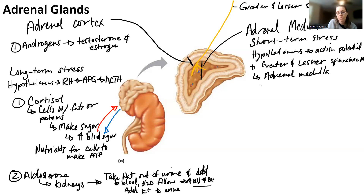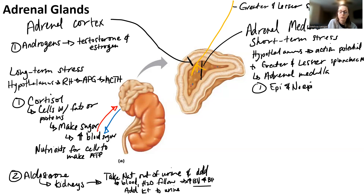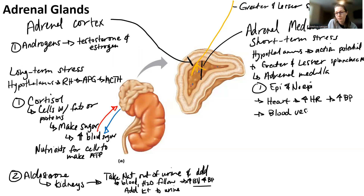The adrenal medulla makes two hormones — epinephrine and norepinephrine, also called adrenaline and noradrenaline. For this class, they're going to have the same targets and effects. They target the heart, increasing heart rate, and as a secondary effect you increase blood pressure. They also target blood vessels — certain blood vessels vasoconstrict and some vasodilate, depending on whether epinephrine or norepinephrine is being used.